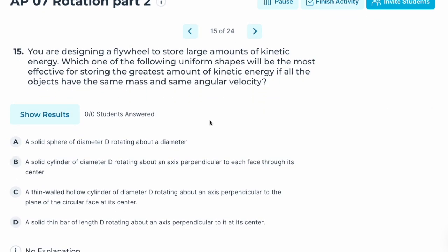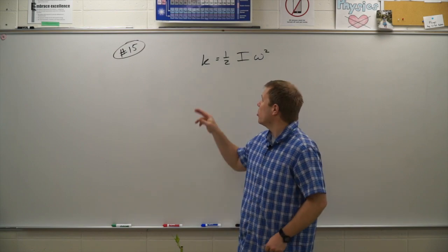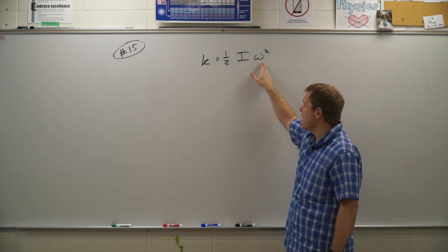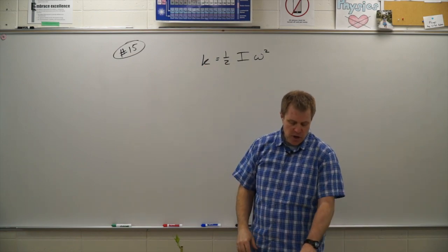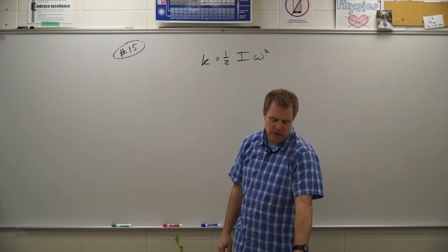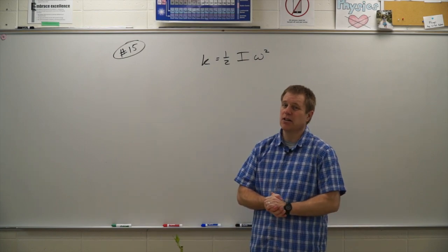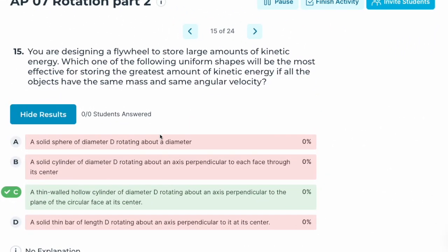Number fifteen: you are designing a flywheel to store large amounts of kinetic energy. Which uniform shape will be most effective for storing the greatest kinetic energy if all objects have the same mass and the same angular velocity? With the same omega, the largest moment of inertia gives the largest kinetic energy. The thin-walled hollow cylinder has I = MR², which is the largest value. Correct answer: C — the thin-walled hollow cylinder.